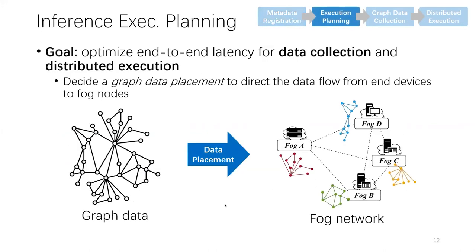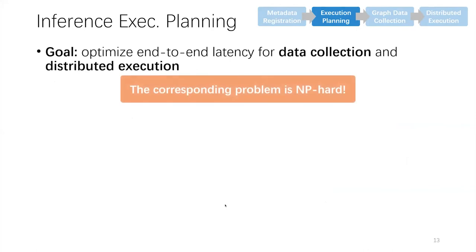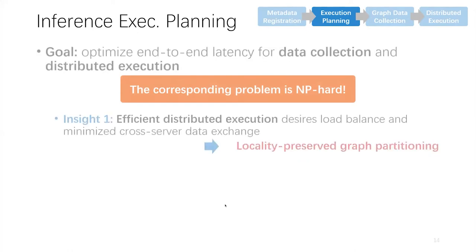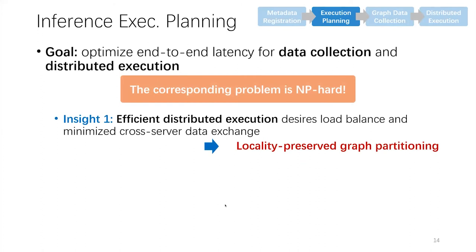The second step is inference execution planning. The goal is to optimize end-to-end latency for data collection and distributed execution. More precisely, we intend to decide a graph data placement that identifies which device's data should be placed at which fog node. This problem is non-trivial. In our paper, we formally formulate it and prove its NP-hardness. To achieve efficient solving, we leverage two insights. First, efficient distributed execution is a parallel processing, which desires load balance and minimized cross-server data exchange.